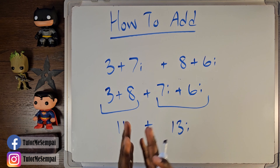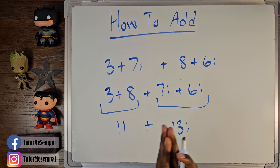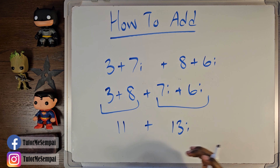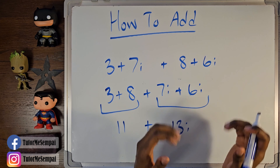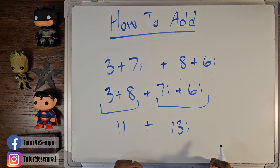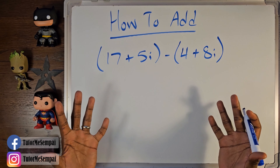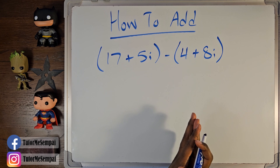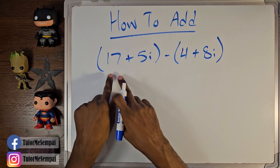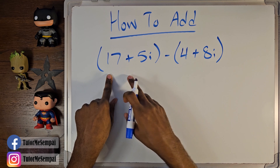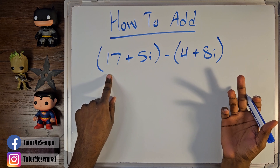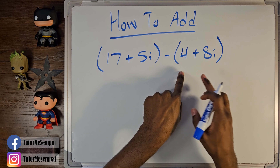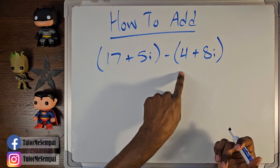All we had to do was group our like terms — group your reals, then group your imaginaries. And the same thing is going to work for subtracting two complex numbers. Here, we have 17 plus 5i, and we're going to subtract 4 plus 8i.